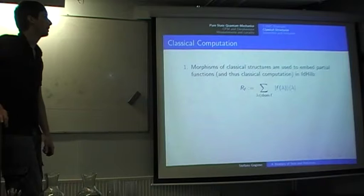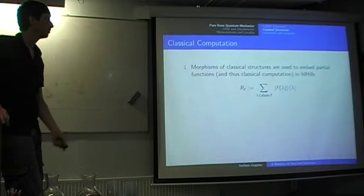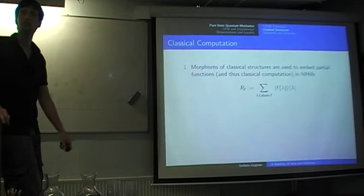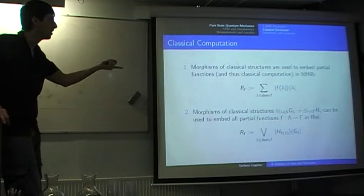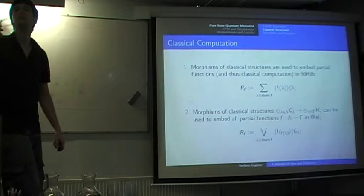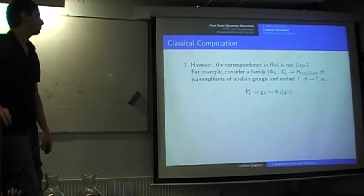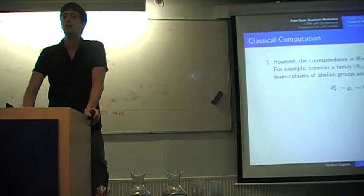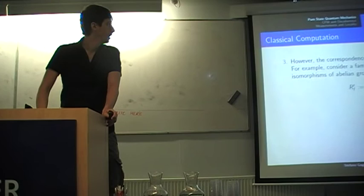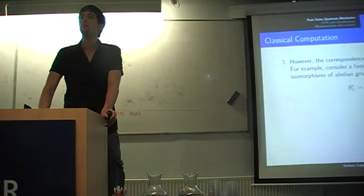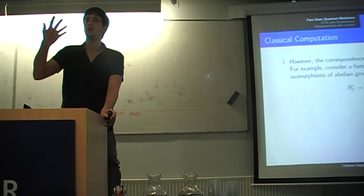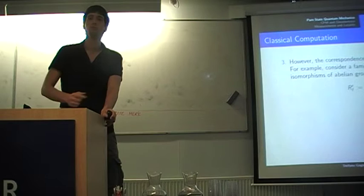In HIL, you can embed all partial functions by picking classical structures on your domain and codomain and representing them as pure maps with respect to those classical structures and their classical states. You can do a similar thing in REL. You define this map which tests against the classical points and returns the appropriate classically computed classical point of the other structure. In HIL, this process is one-to-one. Once you fix a classical structure on domain and codomain, there is a unique classical morphism that corresponds to any partial function. In REL, that is not true. You have quite a lot of room for maneuver, and it comes from the fact that you can use the automorphisms of the groups in the abelian groupoid.